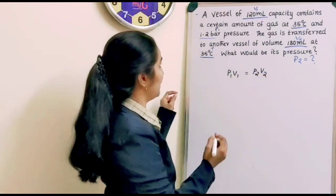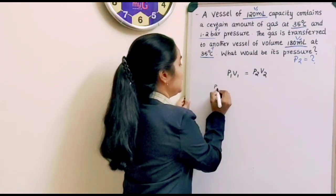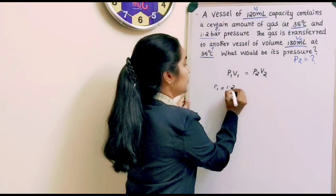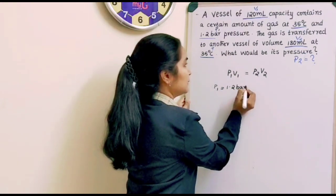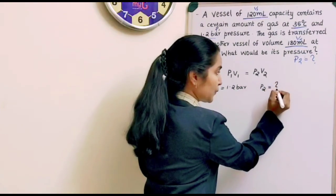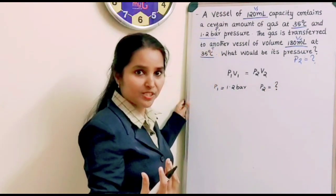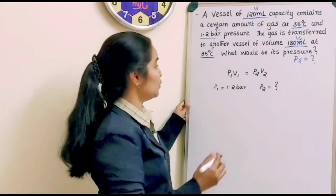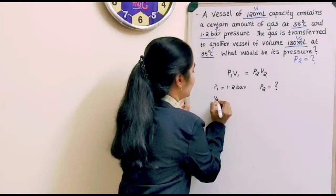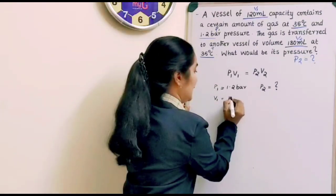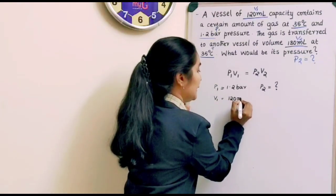And now we have P1. P1 is equal to 1.2 bar. P2 we do not know. We have to find out P2. We do not know the final pressure. That is what we are asked to find out. Right? And now V1 we have. That is 120 ml.